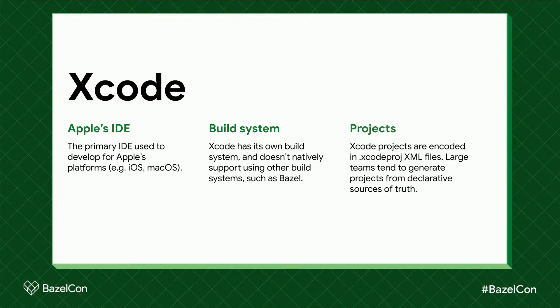Xcode uses an Xcode Proj file to describe a project. This single, sometimes massive XML file can be unruly for large teams to manage, so many of them generate their project from declarative sources of truth, such as YAML files, that end up behaving a lot like Bazel's build files.